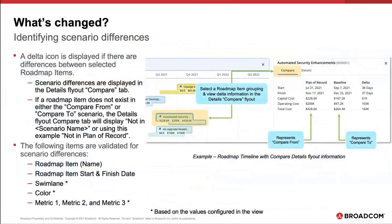The 15.9.3 user experience to review scenario differences is different than 15.9.1. A delta icon is still available if there are differences between the roadmap items in the selected scenarios. Scenario differences are now displayed in a details flyout under a new compare tab. In this example, the plan of record scenario is positioned above the baseline scenario, so you see those two nested there.